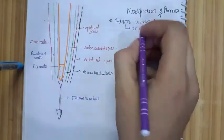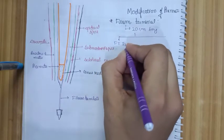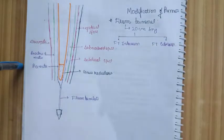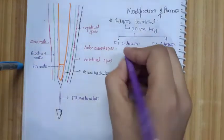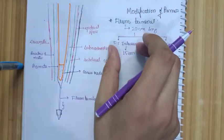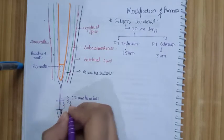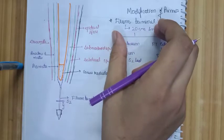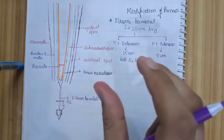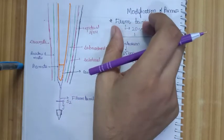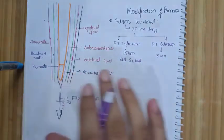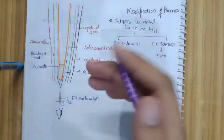The filum terminale is divided into two parts: filum terminale internum and filum terminale externum. The filum terminale internum is around 15 centimeters long, extending to the level of S2. Till S2, the filum terminale is surrounded by other meningeal coverings, which is why it is called the filum terminale internum. The remaining 5 centimeters — where no other meningeal covering is present — is called the filum terminale externum.